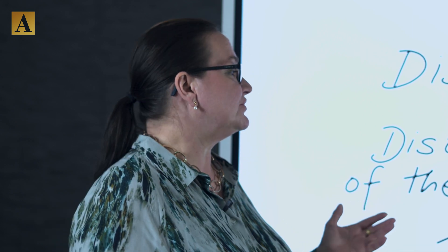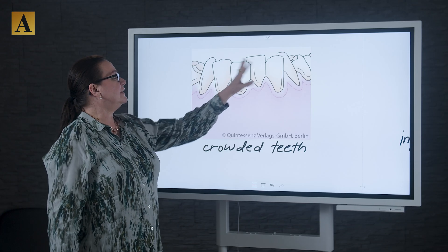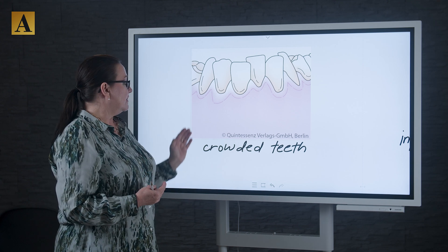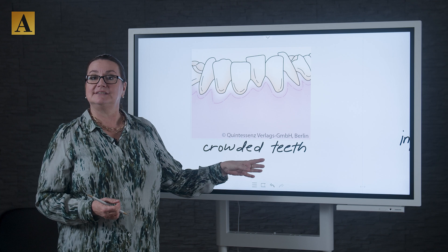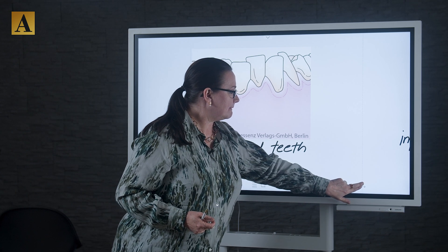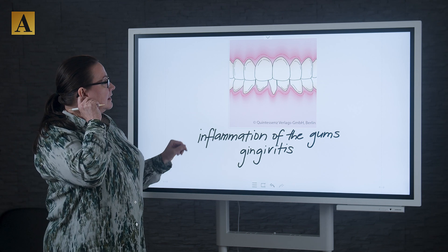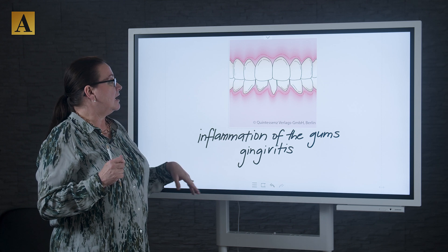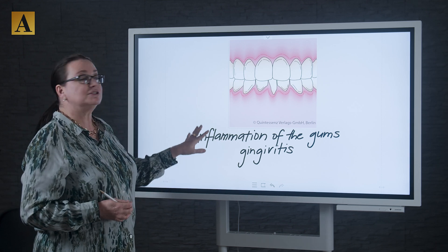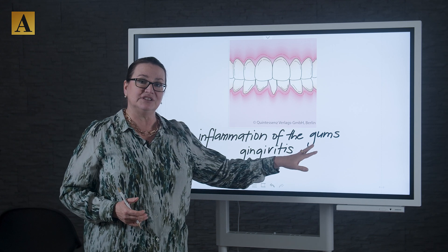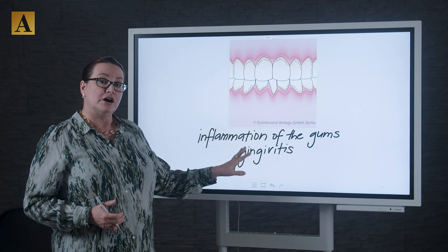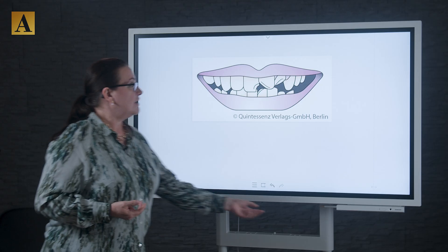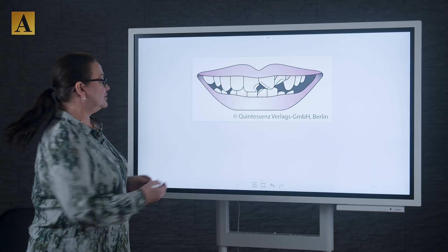If the teeth are standing extremely close together, then we say crowded teeth — this is 'Engstand'. If the gums all around the teeth are inflamed, then we are talking about inflammation of the gums, something your patient will understand well, or gingivitis. The next one is a fractured tooth or fractured teeth.